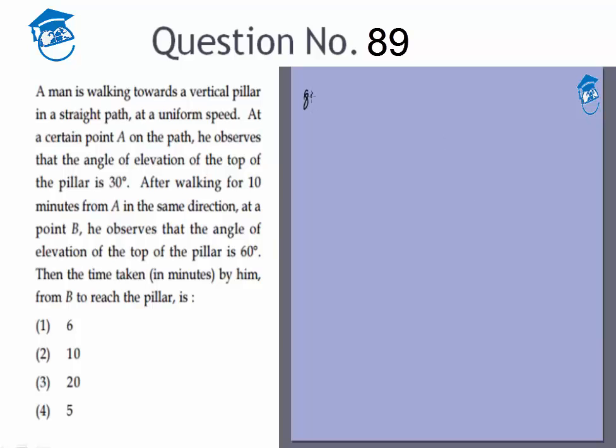This is X, this is Y, let's say Z. This we are given to be 60 and this is 30. A man is walking towards a vertical pillar at uniform speed. At a point A the angle of elevation is 30. He walks 10 minutes and at B it is 60 degrees. So let's say this is Z.